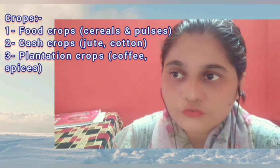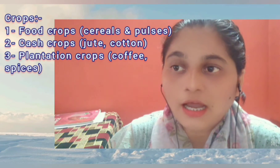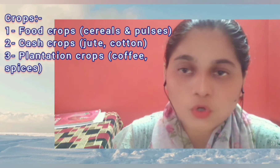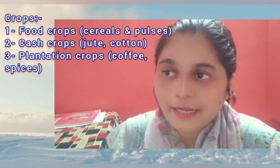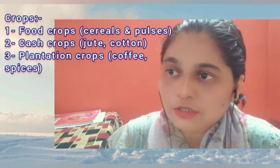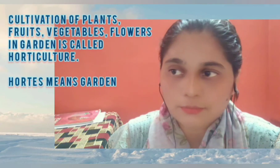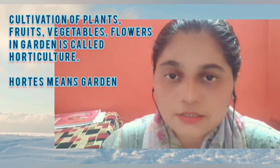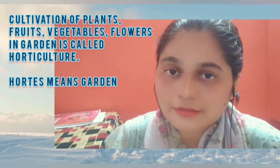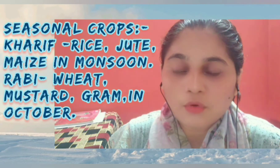Cash crops like rubber, coffee, and spices are grown on plantations, so they are often called plantation crops. Tea is grown in tea gardens while fruits are grown in orchards. The science of cultivating fruits, vegetables, flowers, and ornamental plants is called horticulture, which means 'in the garden.' In India, crops are also classified on the basis of seasons.